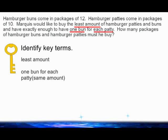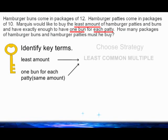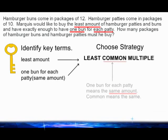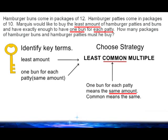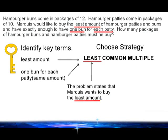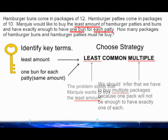The terms 'least amount' and 'one bun for each patty' tell me that this is a least common multiple problem. Because the problem says we need one bun for each patty, we know that the numbers for each of the items have to be the same and we have to find the lowest amount that's the same. In other words, we have to find the least common multiple.